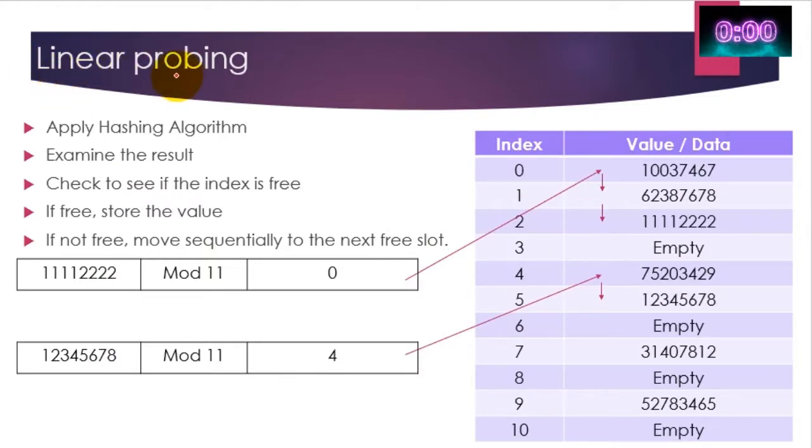Here's how we use something called linear probing. We apply the hashing algorithm, we examine the result, and we check to see if the index is free. If it's free, we store the value. If it's not, we move sequentially to the next free slot. So this record here, produced going through modulo, produced a value of zero. Well, we first go and look at index zero. Is index zero free? Well no, it isn't, and therefore we move down the list until we find an empty slot.